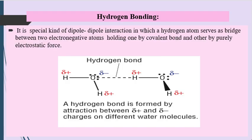The fourth factor is hydrogen bonding, which is a special kind of dipole-dipole interaction in which a hydrogen atom serves as a bridge between two electronegative atoms, holding one by a covalent bond and the other by pure electrostatic force. For example, in water, oxygen is more electronegative (negative end) and hydrogen is positively charged, so they are held together by this special dipole-dipole interaction called the hydrogen bond.